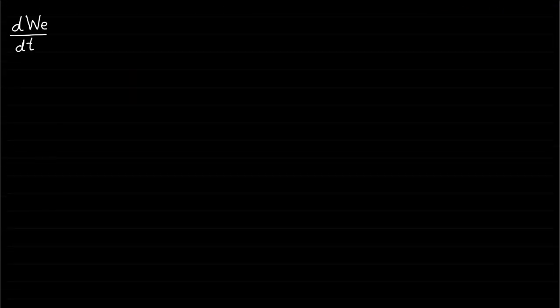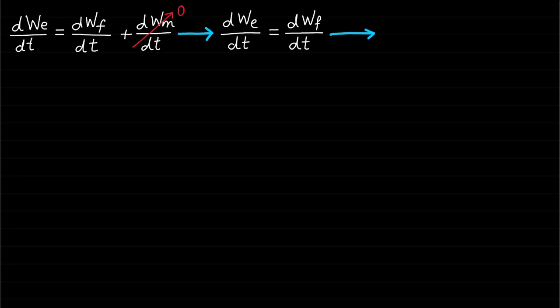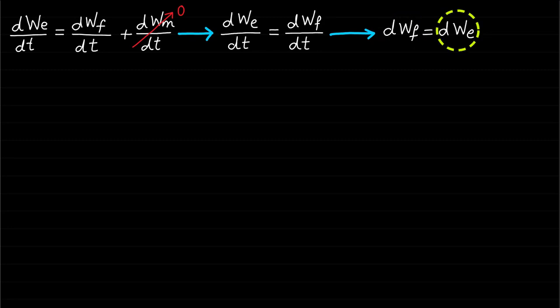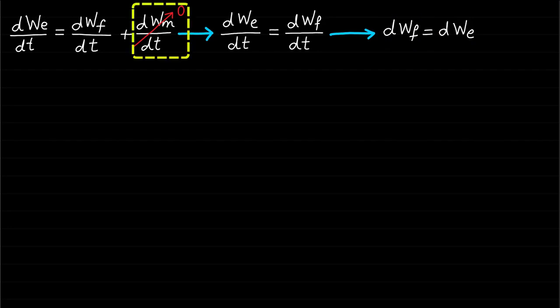Under these two assumptions, the energy balance equation dWe/dt = dWf/dt + dWm/dt leads to the following: the change of the field energy dWf is equal to the change of the electrical energy dWe, because the mechanical power is equal to zero. In other words, all the electrical energy applied to the system will be transferred as field energy when there is no mechanical movement.